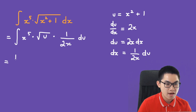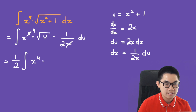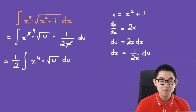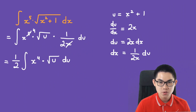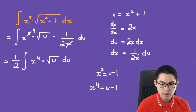Bringing the 1/2 out front, we have 1 over 2 times the integral of x to the power of 4 times the square root of u, du. Now we want to convert x to the power of 4 into terms of u. Since u equals x squared plus 1, x squared equals u minus 1, so x to the power of 4 equals (u minus 1) squared.